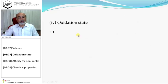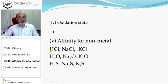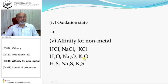Oxidation state: hydrogen shows plus one oxidation state; all other alkali metals also show plus one oxidation state. Affinity for non-metals: hydrogen combines with chlorine; alkali metals also combine with chlorine and form salts. Two hydrogen atoms combine with one oxygen; similarly two alkali metals combine with one oxygen. Two hydrogen atoms combine with sulfur; two alkali metals also combine with sulfur.